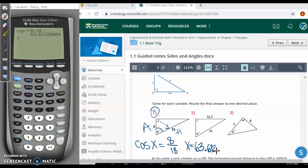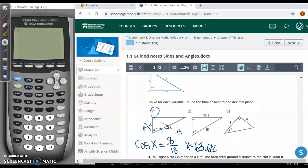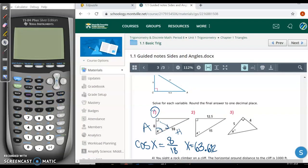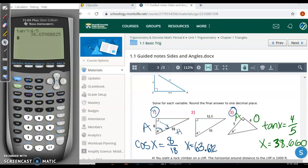Pause the video and try to do the last one, number 3. See what you get and then check back with me. Here I used tangent because I was given opposite and adjacent. And pressing the inverse tan button of 4 over 5, you get your answer to be about 38.660 degrees. Write down what questions you have and have a great night.